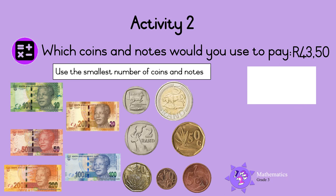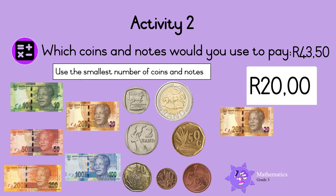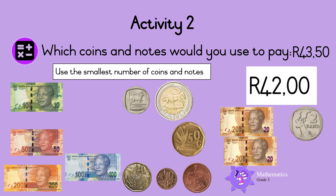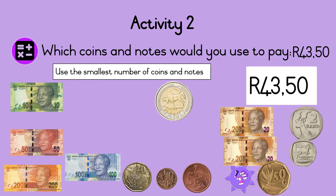Last one. Which coins and notes would you use to pay 43 Rand and 50 cents? Well, we would first need a 20 Rand note, and then another 20 Rand note. We now have 40 Rand. We then need a 2 Rand coin and a 1 Rand coin. This gives us 43 Rand. And lastly, we need 50 Cents. Well done!